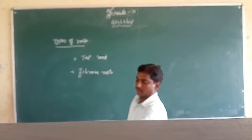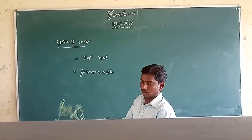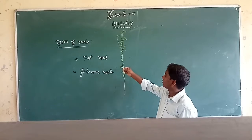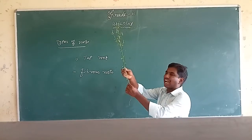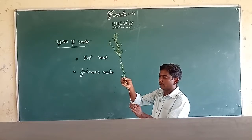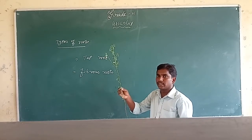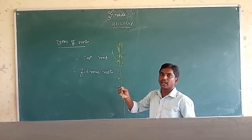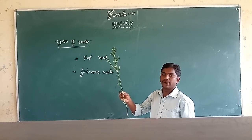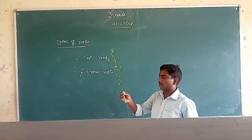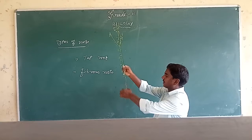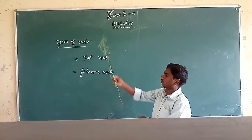First we will discuss about what is the meaning of tap root. See this plant — this is a tap root. The root is a very important part of a plant because it absorbs water and minerals from the soil, and root is always holding the soil. This is the structure of tap root.